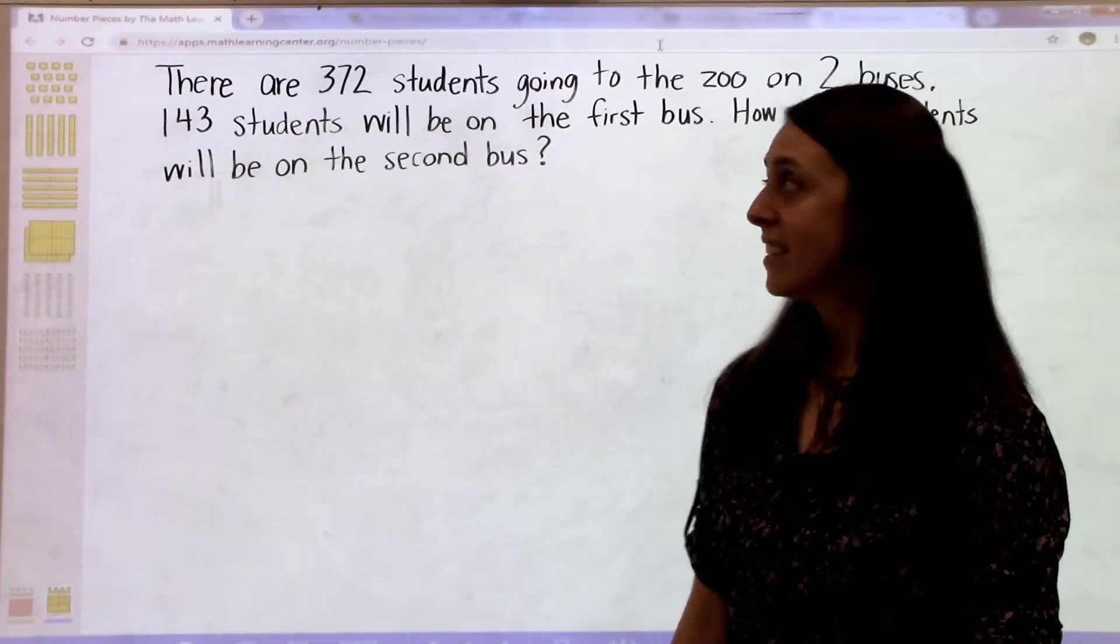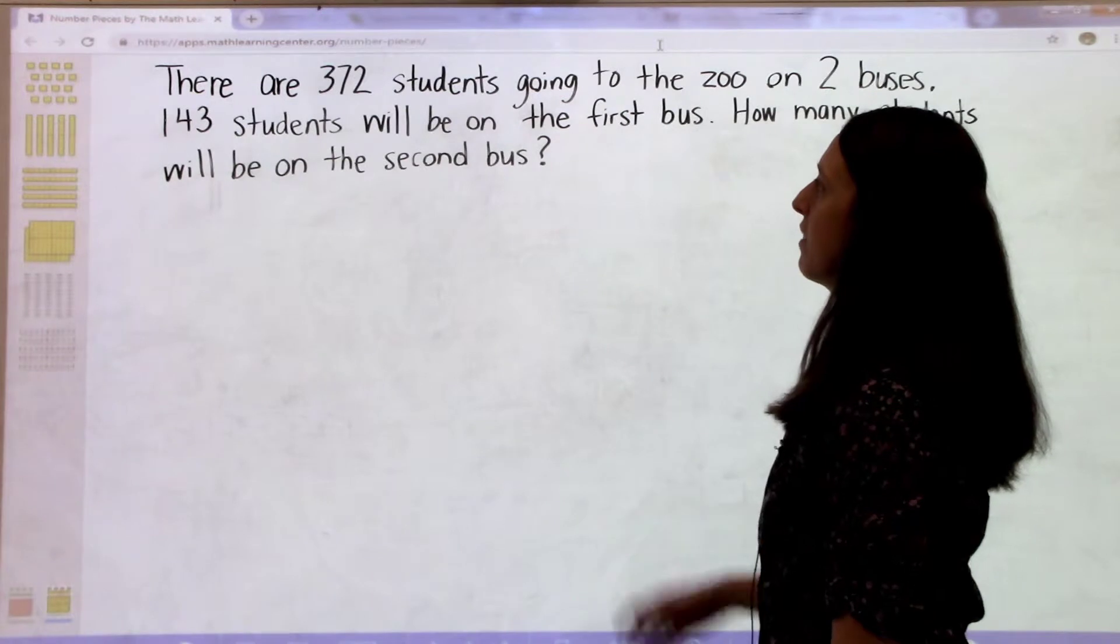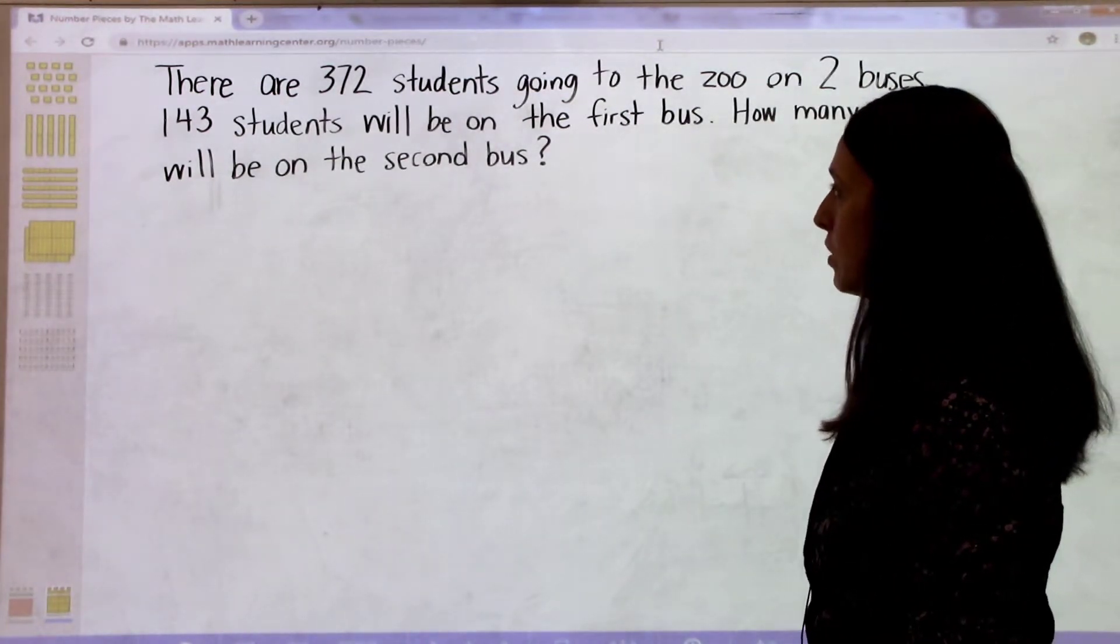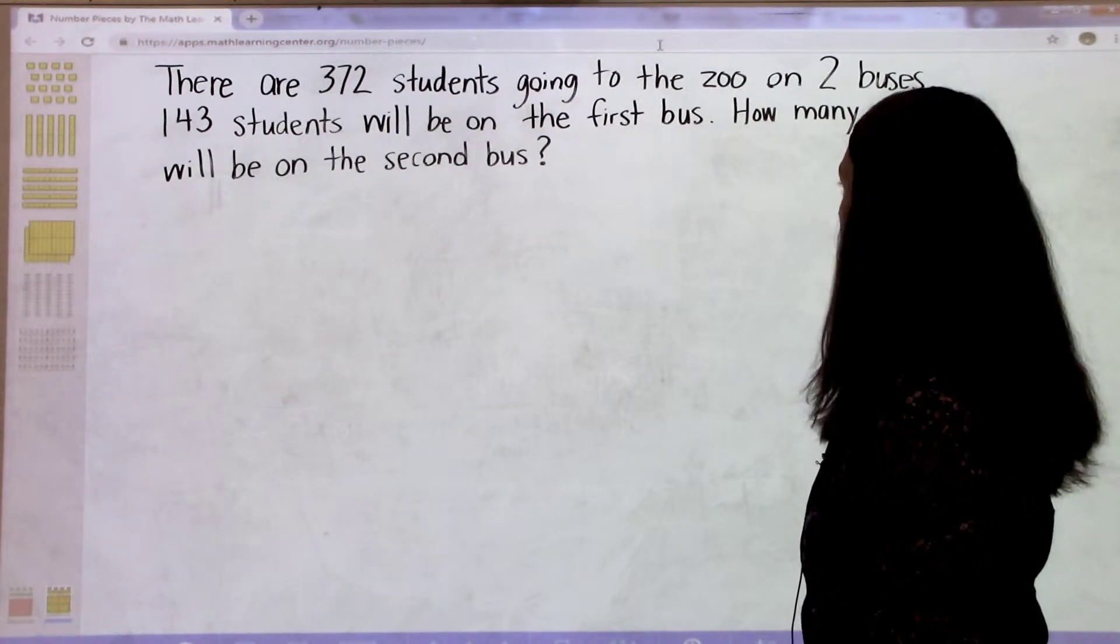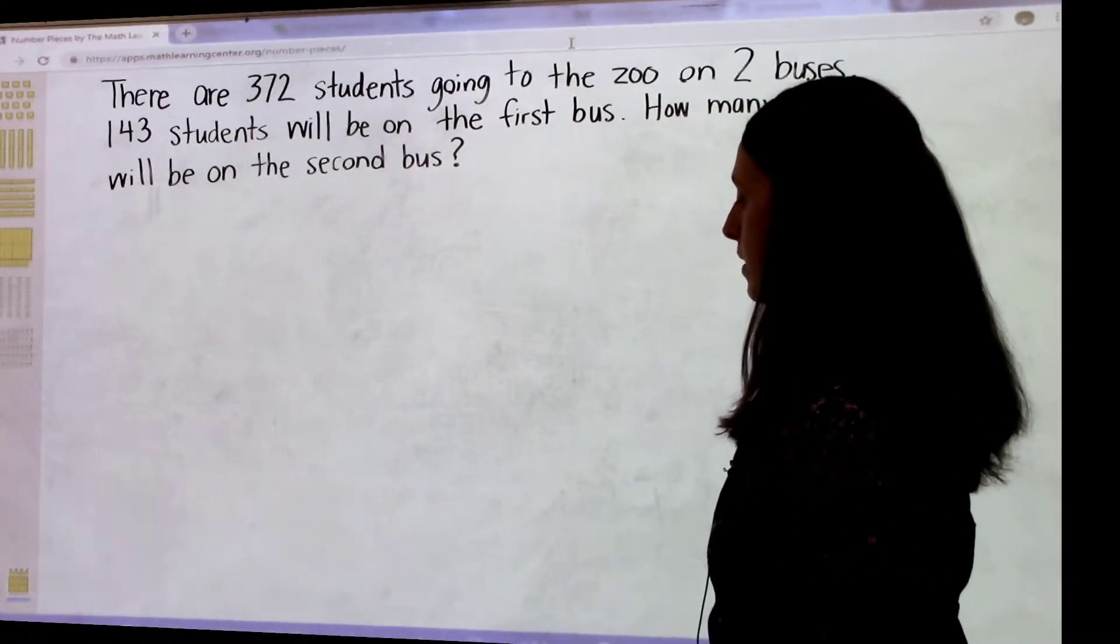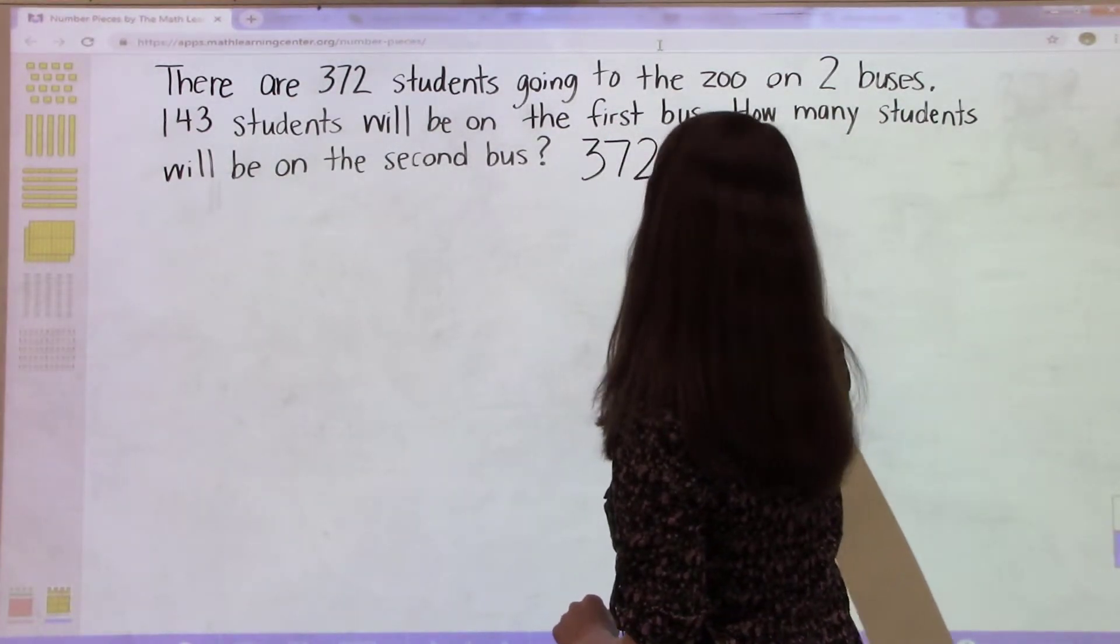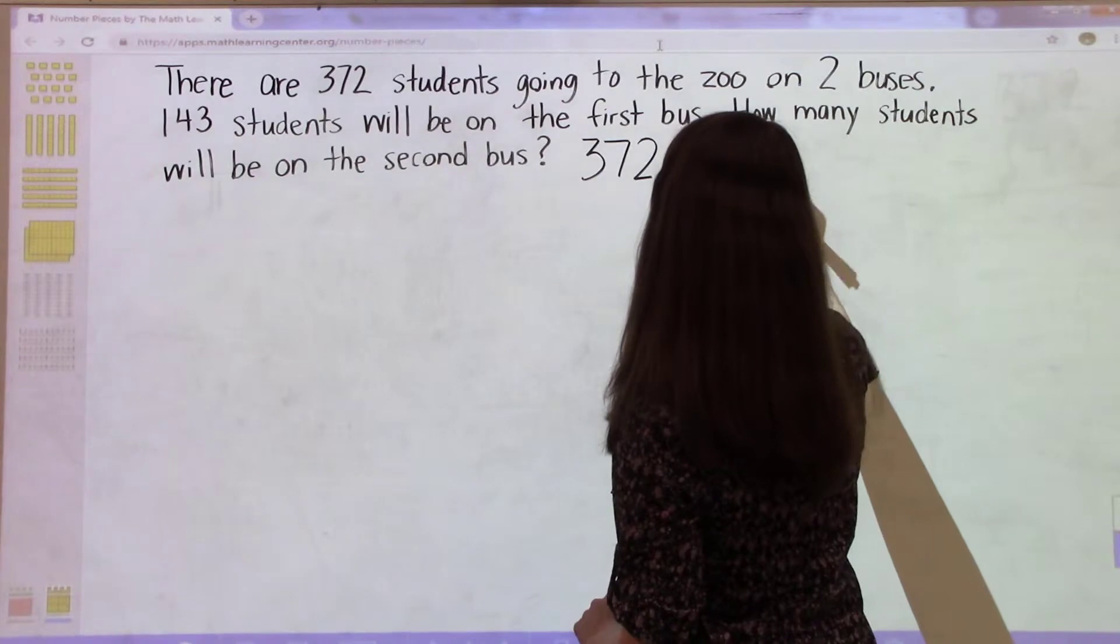Today's problem is there are 372 students going to the zoo on two buses. 143 students will be on the first bus. How many students will be on the second bus? The equation is 372 minus 143.